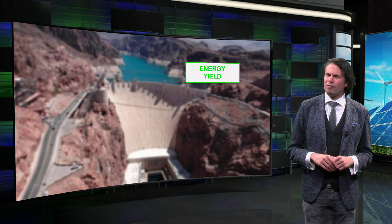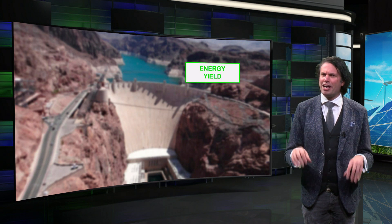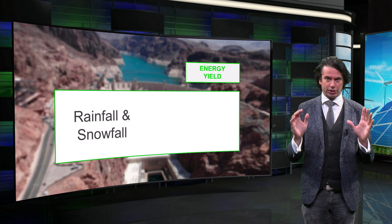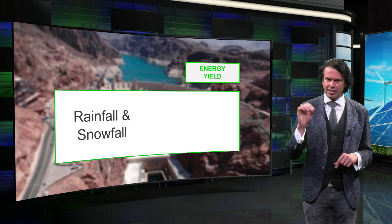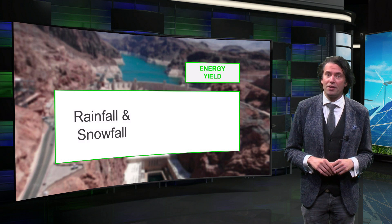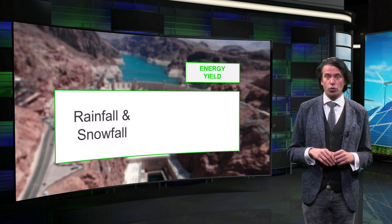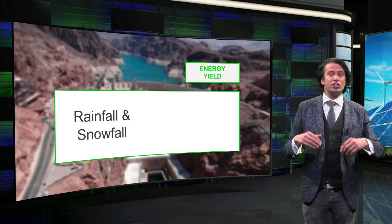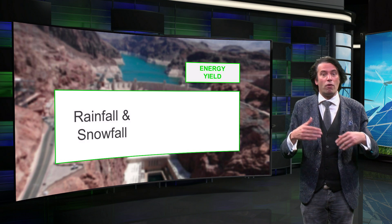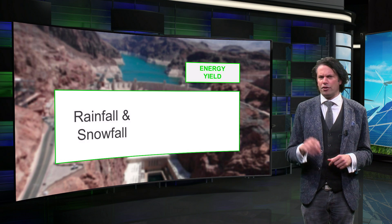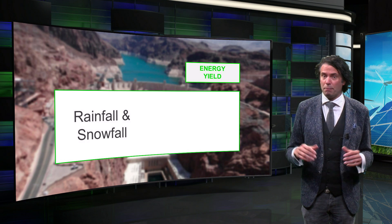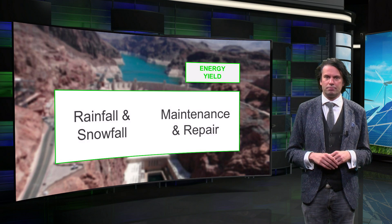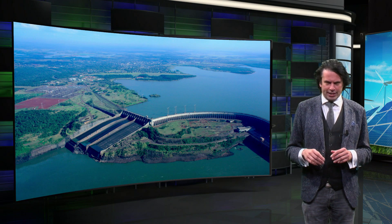The final energy yield of a hydropower plant can be strongly influenced by weather conditions, especially the amount of precipitation. This affects the available water flow and the height difference of the water, and consequently the potential energy. This explains why seasonal fluctuations in power output occur. Another factor is that the power plant, like many systems, has a certain downtime for maintenance and repair.